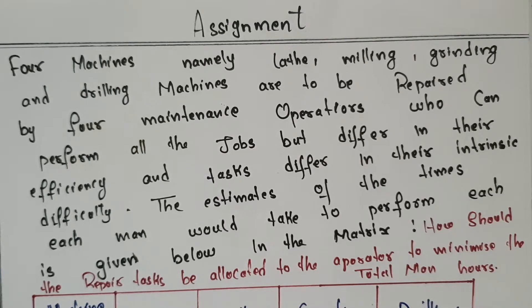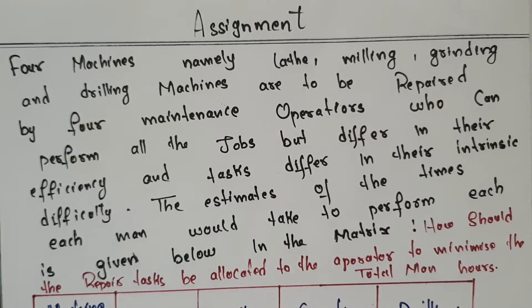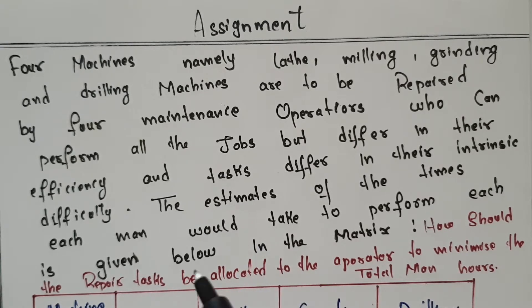What assignment means: you have to arrange in a particular order, you have to arrange the sequence according to that order — which person is suitable for which type of job. In a class, number of students are there; some people are good in theory, some are good in numerical problems, some are good in mathematics, some in physics, some in chemistry. So you have to assign who is perfect in that type of work — that is known as the assignment.